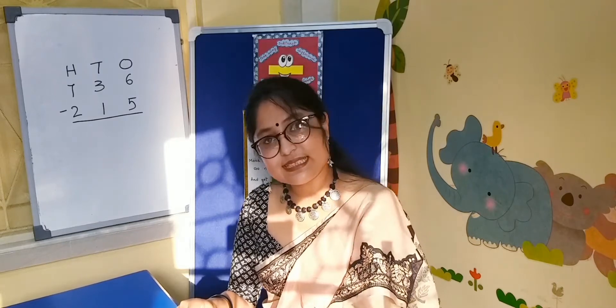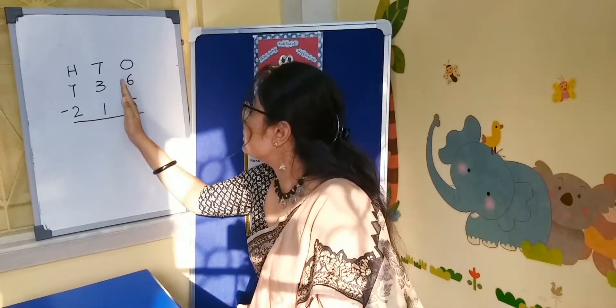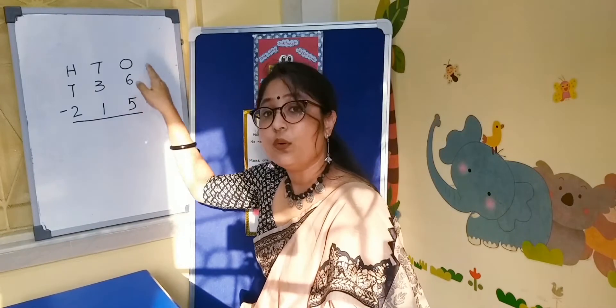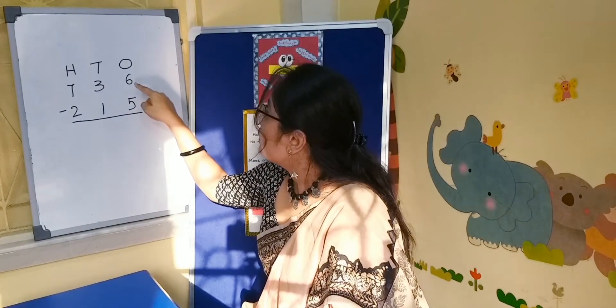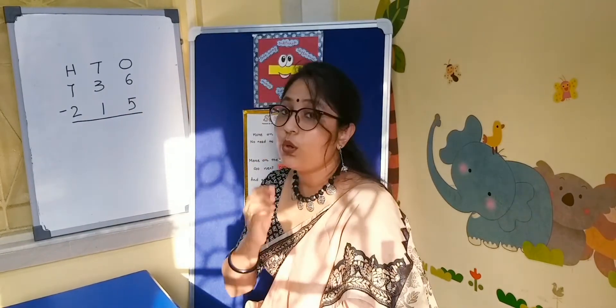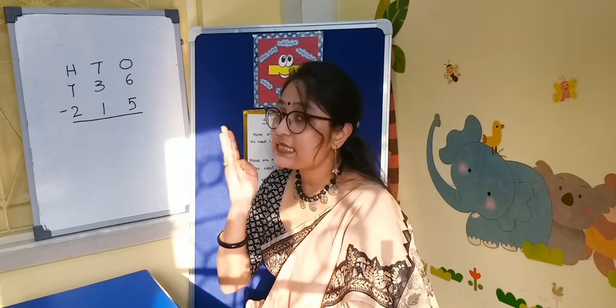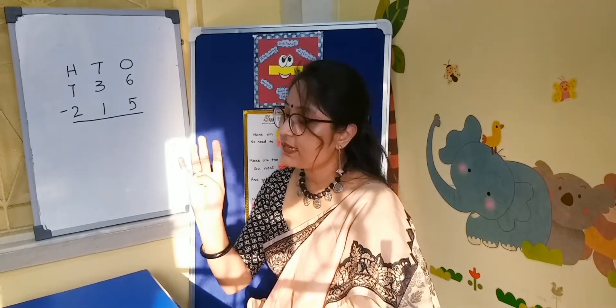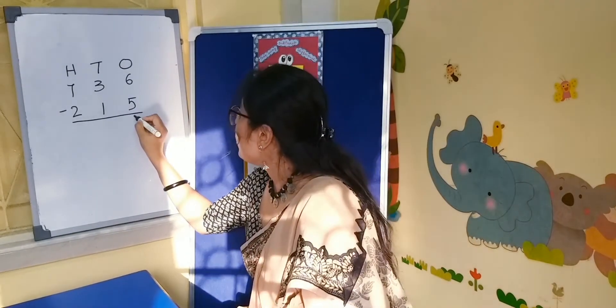Let's start. First we will do the ones column. Here is 6 and here is 5. So from 5 we have to count up to 6 — that is 1. We have to write 1 here.